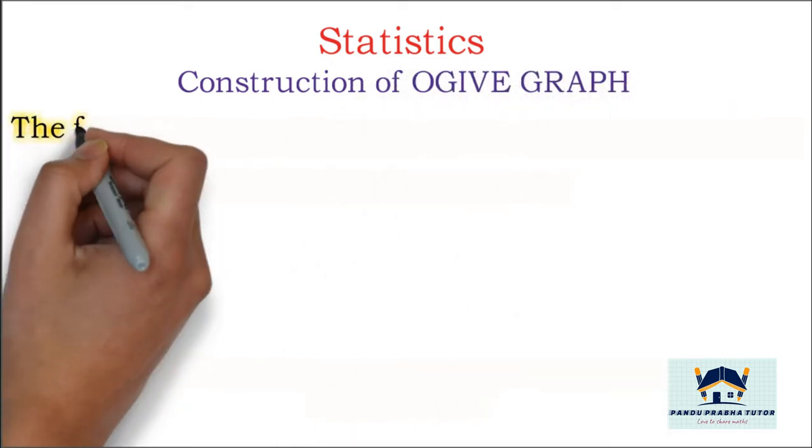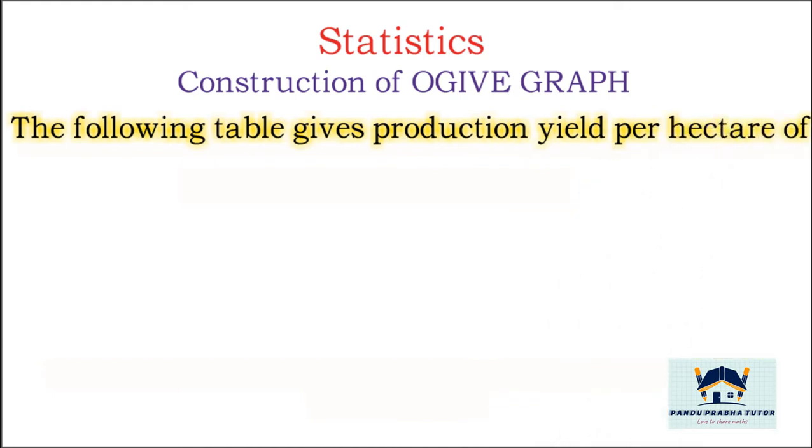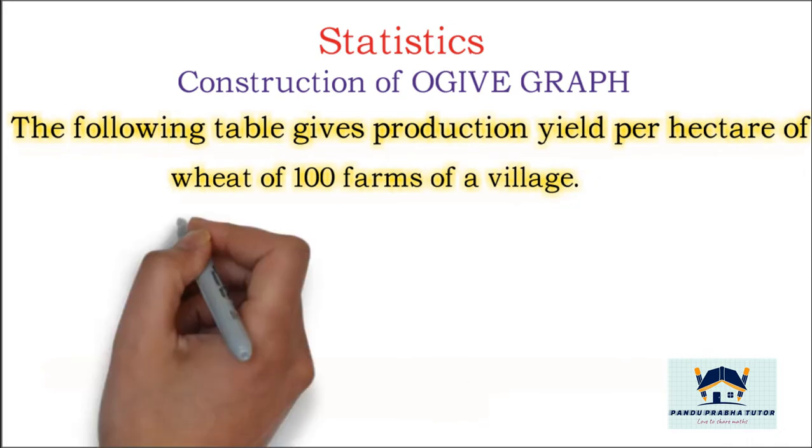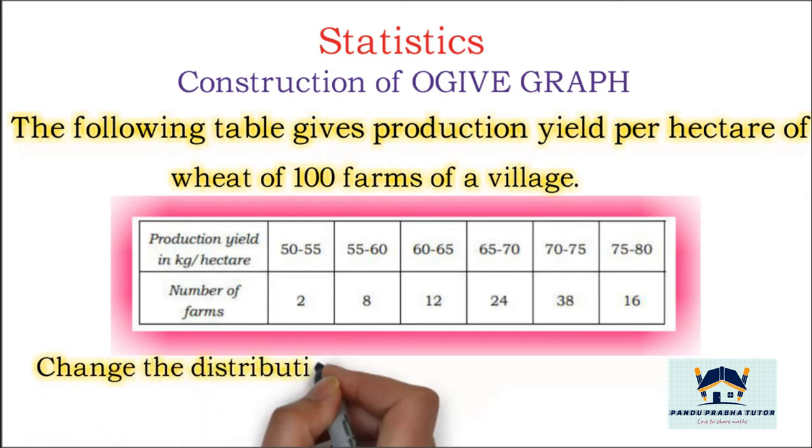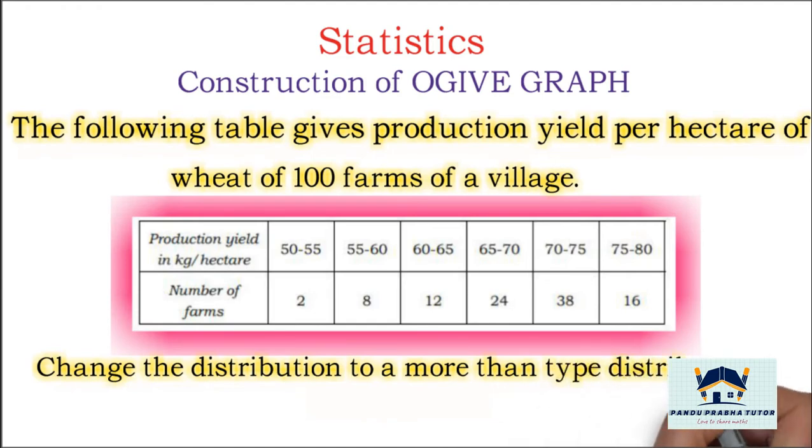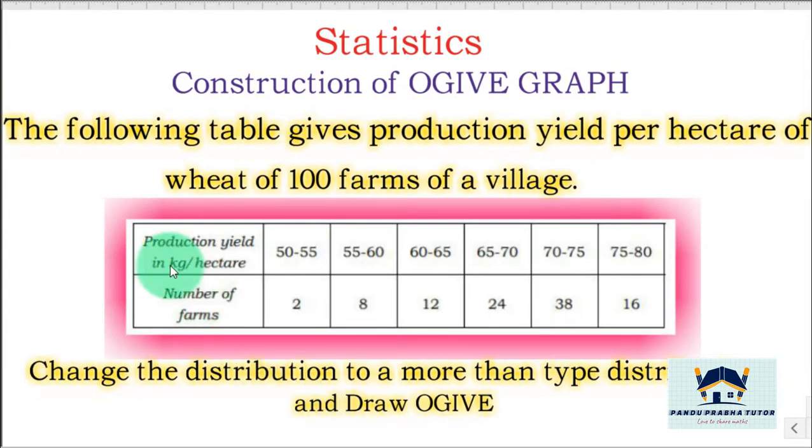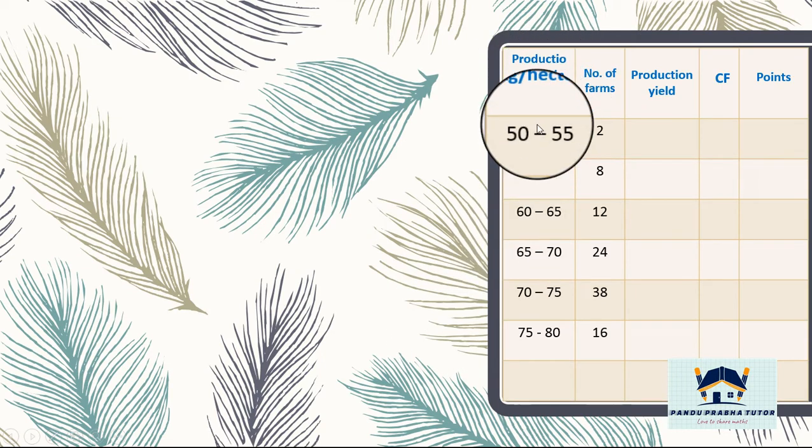Construction of ogive graph. The following table gives production yield per hectare of wheat of 100 farms of a village. We are taking same question but type of distribution is more than type. First we have to change the distribution to more than type.